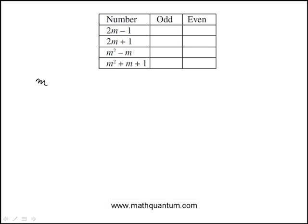We're told that M is an odd integer, and the question asks us to indicate whether each of these numbers is odd or even. I'm going to start by doing it in a general way.